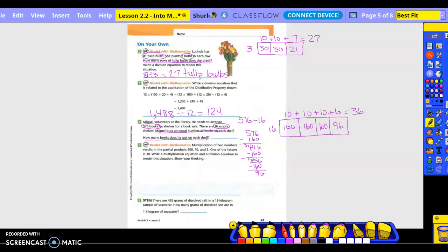Number five: Model with mathematics. Multiplication of two numbers results in a partial product 210 and 3. One of the factors is 30. Write a multiplication equation and a division equation to model the situation. Show your thinking.